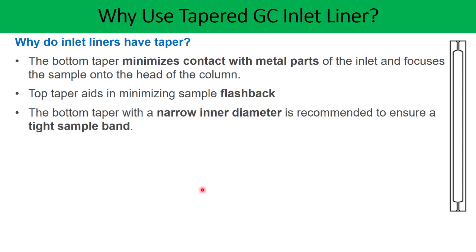The bottom taper with a narrower inner diameter is recommended to ensure a tight sample band. If this taper has the narrower inner diameter, your sample band is certainly going to get tighter, and because of that you will also end up getting sharper peaks.